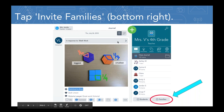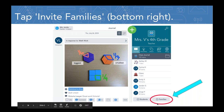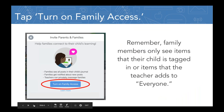So I'm in my Seesaw class here — this is just a screenshot. Let's say this is my class called Mrs. V's Fourth Grade. I'm ready to invite families. I just look at the bottom right of my screen. You'll see a button with a plus sign and 'Families.' If I click that button, a pop-up opens asking me to turn on family access to enable it in my Seesaw class. I'm going to click this if I'm ready to connect families.